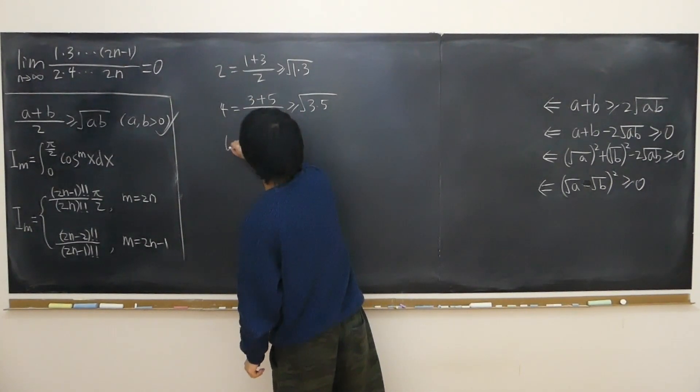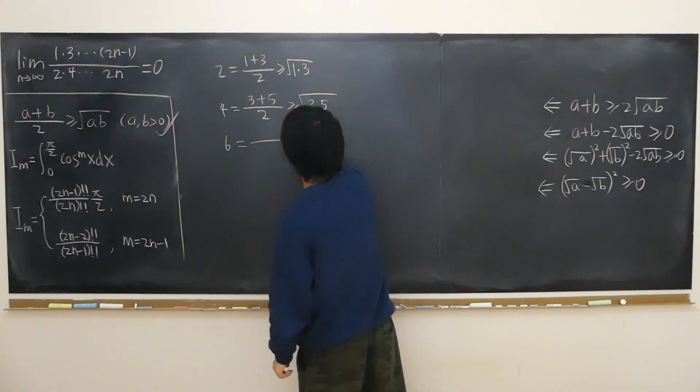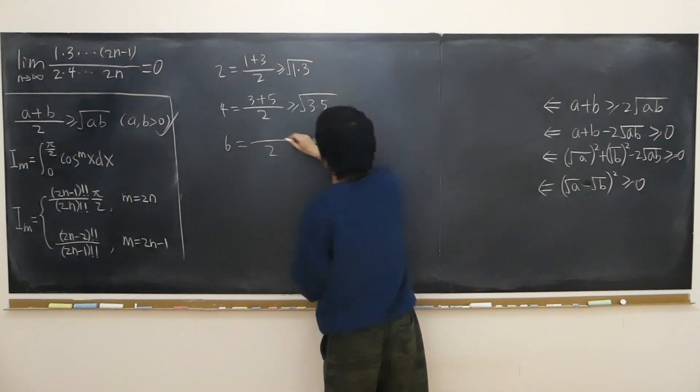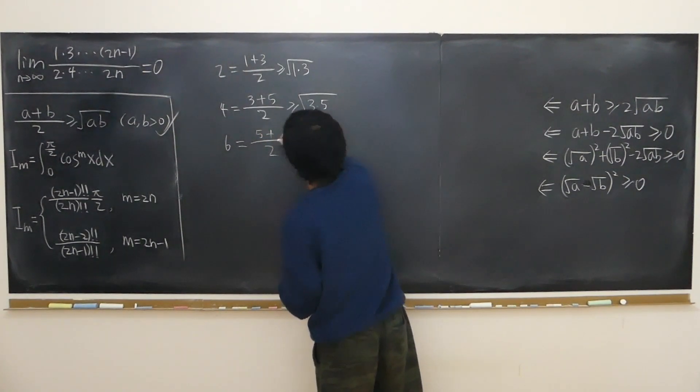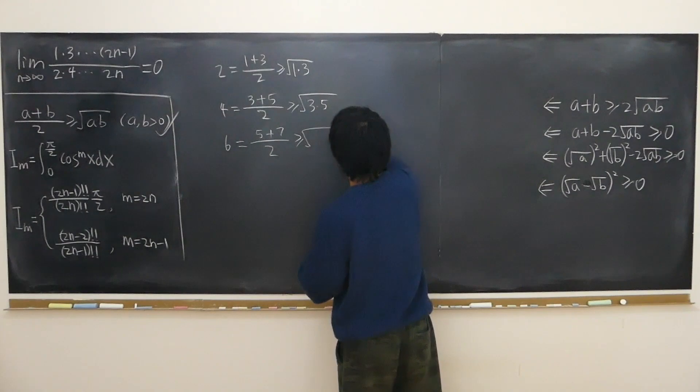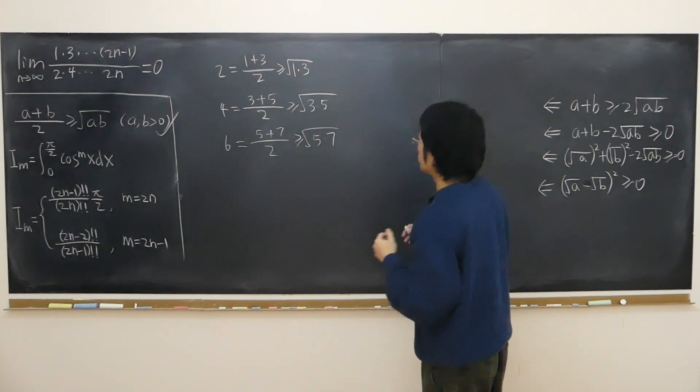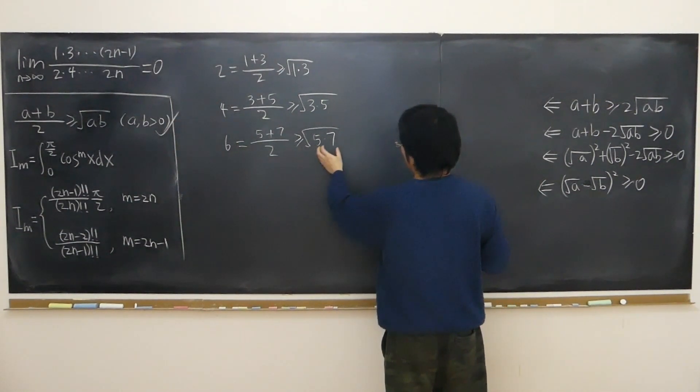Likewise 6, if we just want to write one more number, we have half of (3 plus 5). 5 plus the next odd number 7 is greater than or equal to square root of 5 times 7. So I'll just put it in this way instead of multiplying it out, so we can manipulate the equation further.